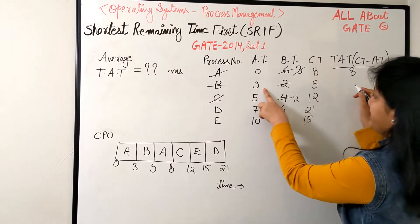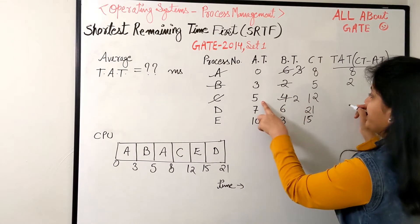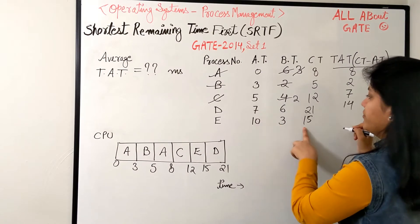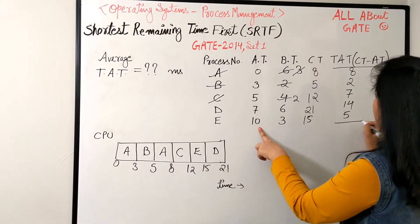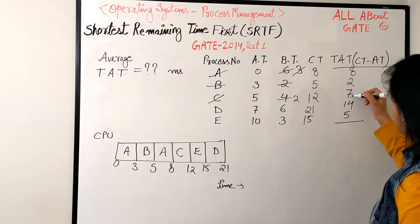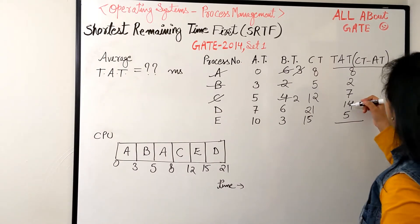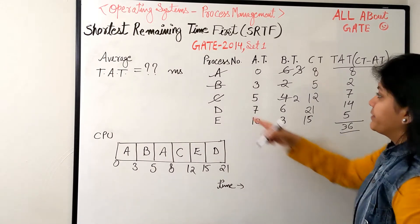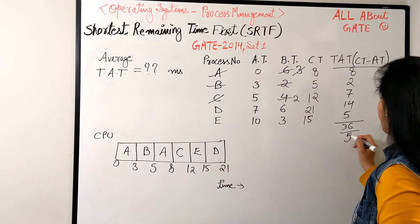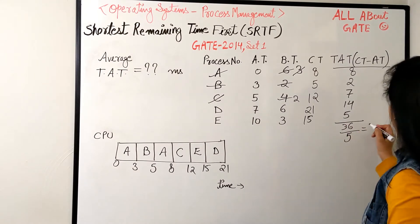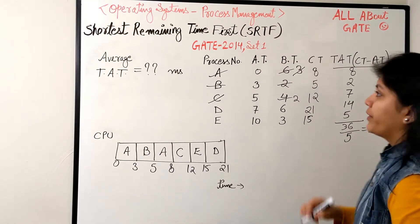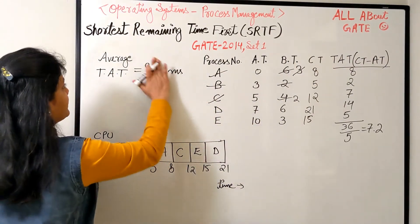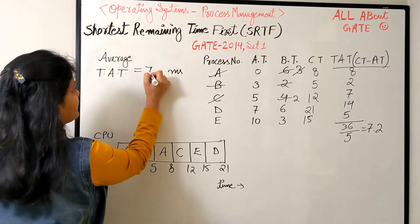Turnaround time equals completion minus arrival. A: 8 minus 0 = 8. B: 5 minus 3 = 2. C: 12 minus 5 = 7. D: 21 minus 7 = 14. E: 15 minus 10 = 5. Sum: 8+2+10, then +7=17, +14=31, +5=36. Divided by 5 processes: 36/5 = 7.2 milliseconds. The average turnaround time is 7.2.